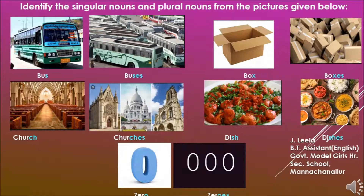Look at these pictures, students. We see a bus and its plural buses. We see a box and its plural boxes. We see a church and its plural churches. We see a dish and its plural dishes. We see a zero and its plural zeros. Did you notice a difference? This time we did not add just S — we have added two letters to them: E and S. We also make plurals by adding the letters E and S at the end of a noun.